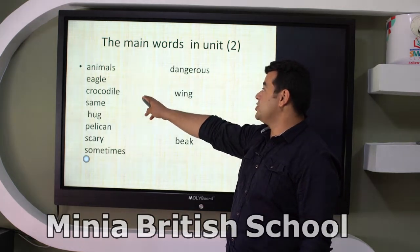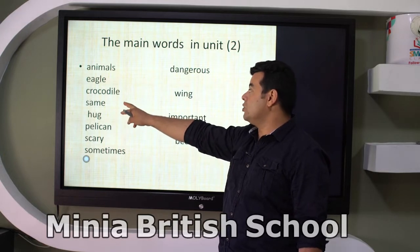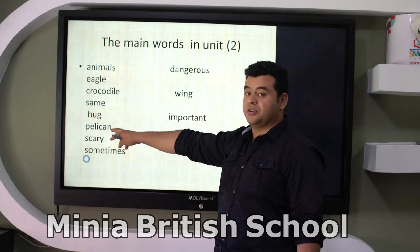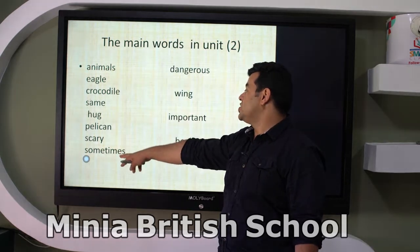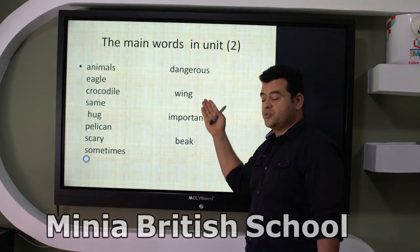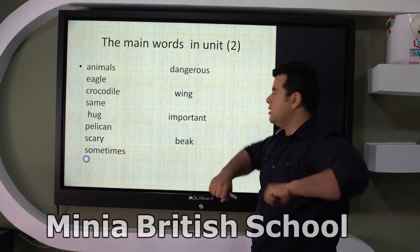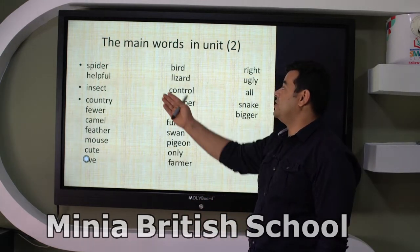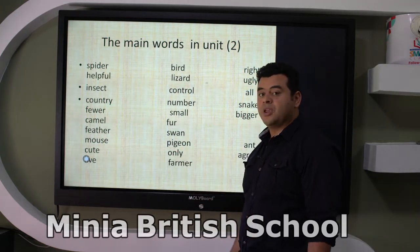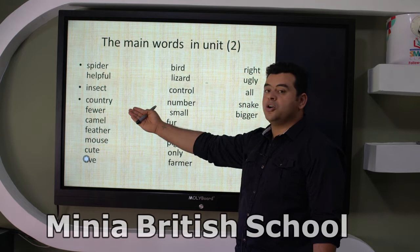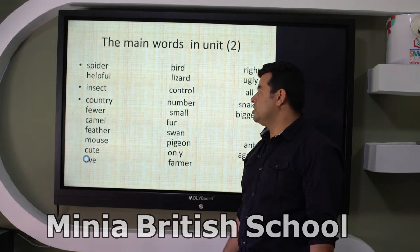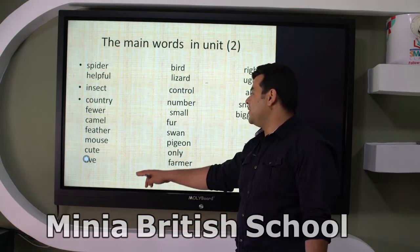We've got some animals like eagle, crocodile, pelican — this is a new word, pelican, repeat after me: pelican. Sometimes dangerous. We also took: wing, important, beak, spider, helpful, insect, country, fewer, camel, feather, mouse, cute, bird, lizard.